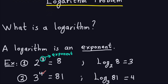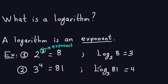Let's look at another example: three to the fourth equals 81, so four is the exponent. In the language of logarithms, log base three of 81 equals four. The three is the base, four is the exponent, and 81 is the result. If you see log₃(81), it means: what exponent does three need so that three to that power equals 81?